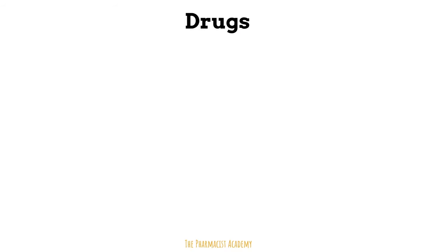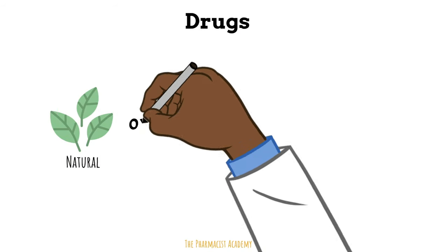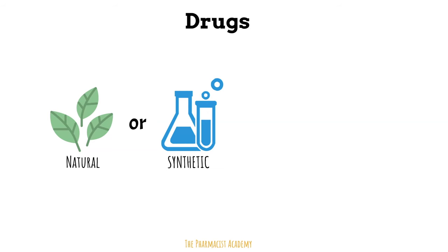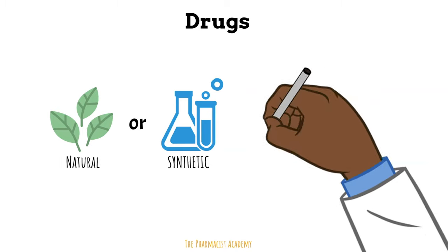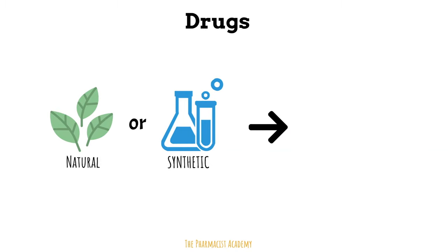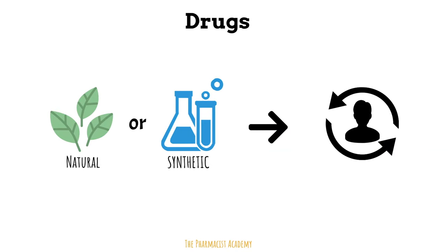Let's start with the basics. Drugs are substances that can be natural or synthetic. Natural meaning the ingredient in the drug that leads to the therapeutic effect comes from something natural, like a plant, for example. Synthetic meaning this ingredient was synthesized. Whether natural or synthetic, all drugs are able to change the physiologic state or normal function of things in the body.